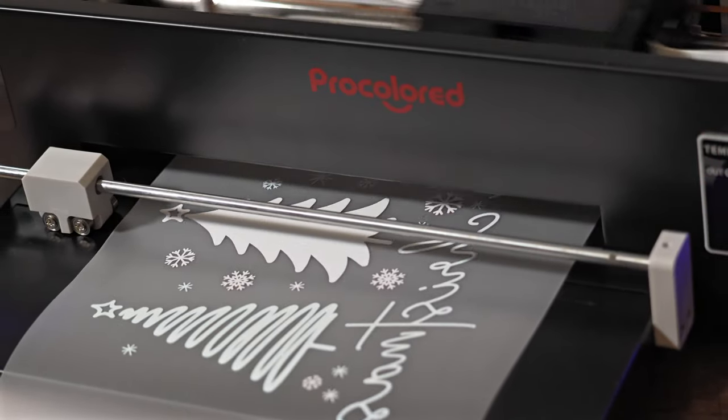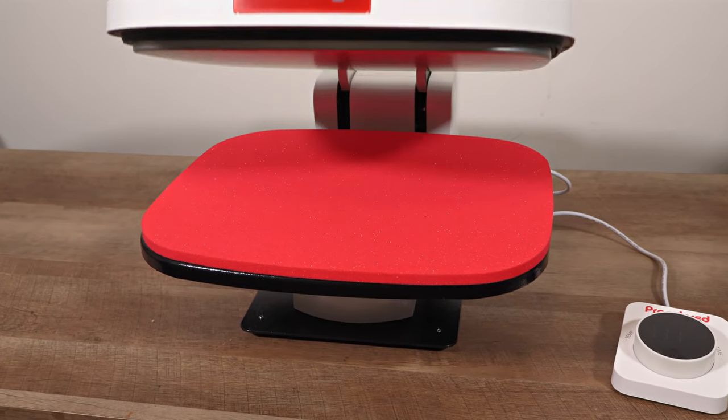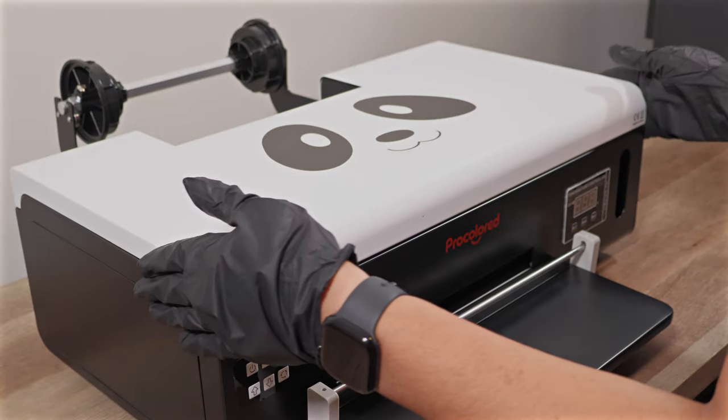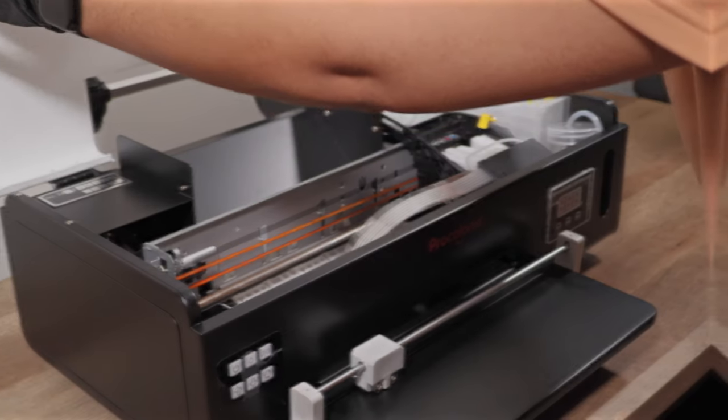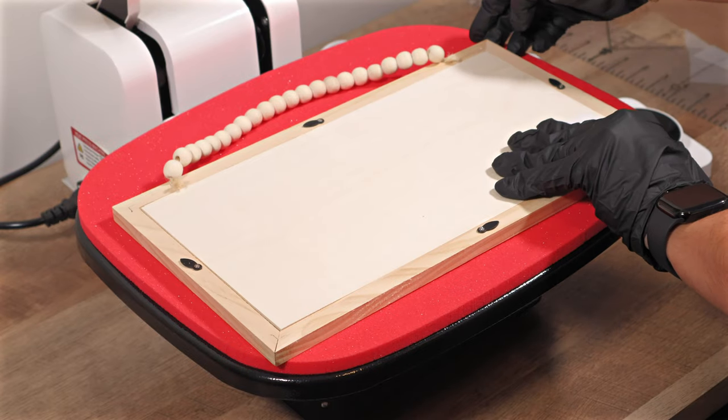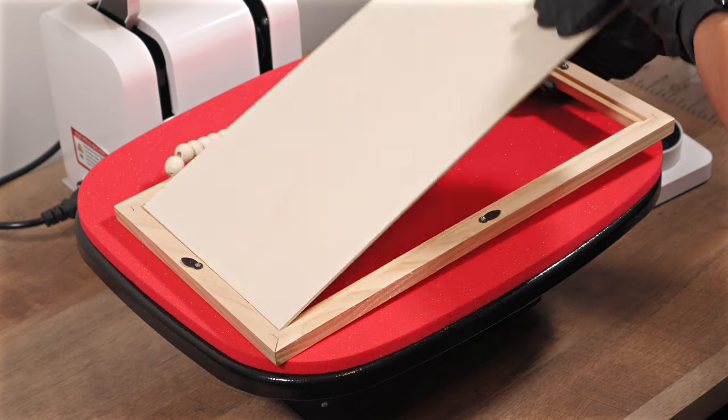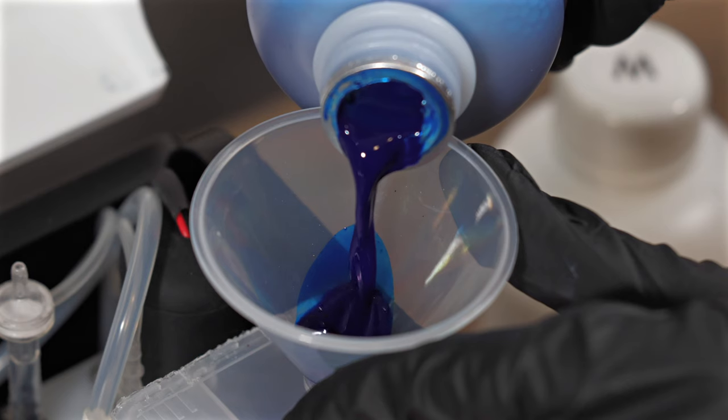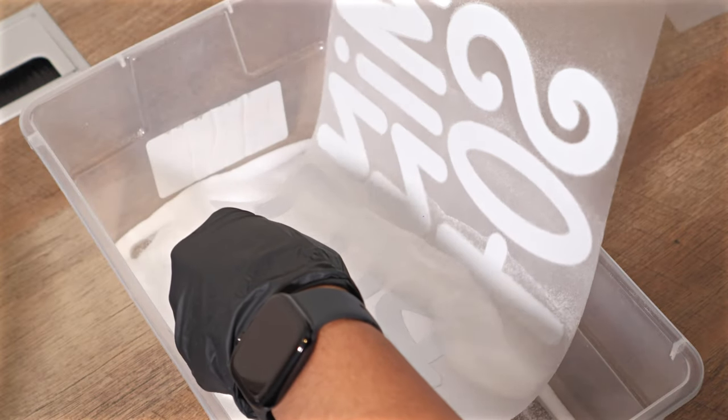Welcome back to the channel. Today, we're diving into the exciting world of DTF printing with the ProColored F8 printer, oven, and heat press. We'll be creating vibrant custom t-shirts, a wooden sign, and even a personalized hoodie. Whether you're new to DTF or just curious, stick around to see how it all comes together. Let's get started.